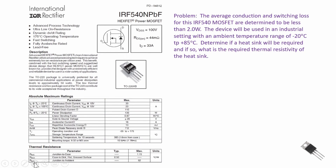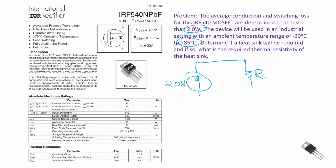Now let's do an example with this device. If we consider that the average conduction and switching loss were determined to be 2 watts, and the device will be used in an industrial setting with an ambient temperature range of minus 20 degrees C to plus 85 degrees C, determine if a heat sink will be required and if so, what is the required thermal resistivity of the heat sink. We know that the power dissipation is going to be 2 watts. We have a thermal resistance from the junction to the case which is equal to 1.15 degrees centigrade per watt.